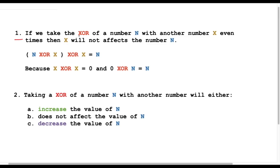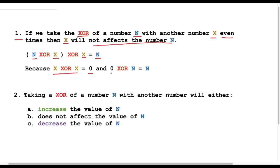The first point is: if we take the XOR of a number N with another number X an even number of times, then X will not affect the number N. Taking XOR of N with X an even number of times means the value of N will remain the same, because the XOR of the same number is zero — here X appears two times, so XOR of X with X is zero.